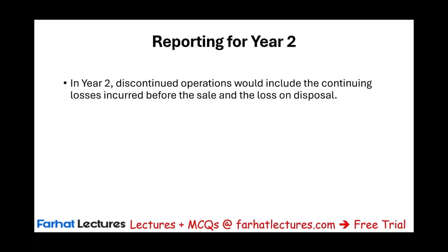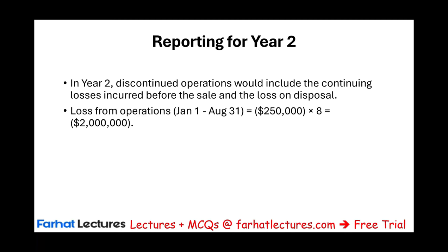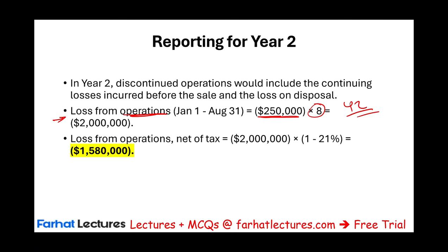Now let's look at year two. They told us losses are $250,000 per month, and we operated the business for eight months because we sold it in August. Therefore, gross loss from operations is $2,000,000. Net of tax — taking $2,000,000 times one minus the tax rate — the loss from operations net of tax is $1,580,000.